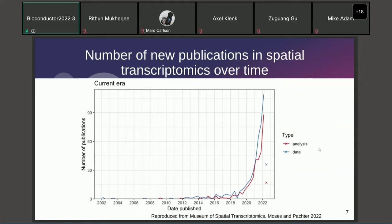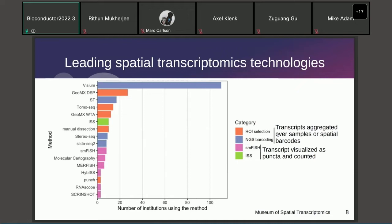Back to spatial transcriptomics — spatial transcriptomics technologies help us make that kind of map in histological space. This plot shows the number of new publications for spatial transcriptomics over time. For both data collection (blue curve) and data analysis (red curve), we see a sharp increase in interest and new publications since 2018.